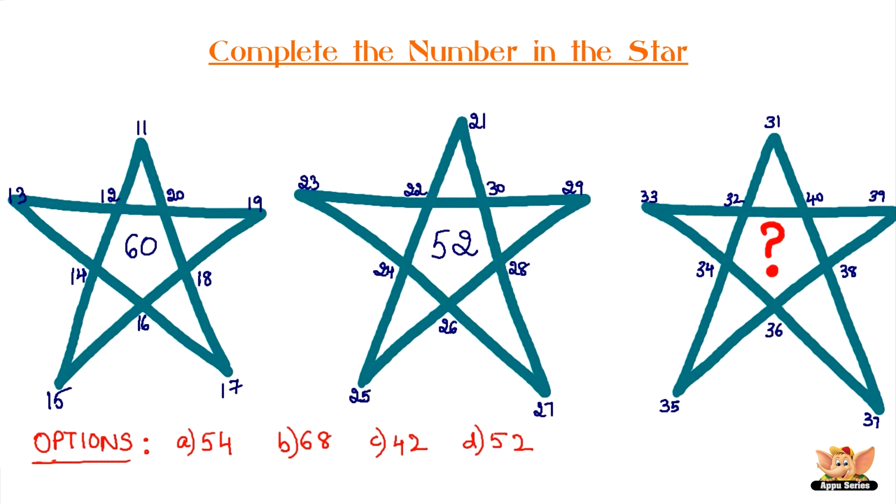Answer is B: 68. Add all the prime numbers in each star. 11 plus 13 plus 17 plus 19 equals 60. 23 plus 29 equals 52. 31 plus 37 equals 68.